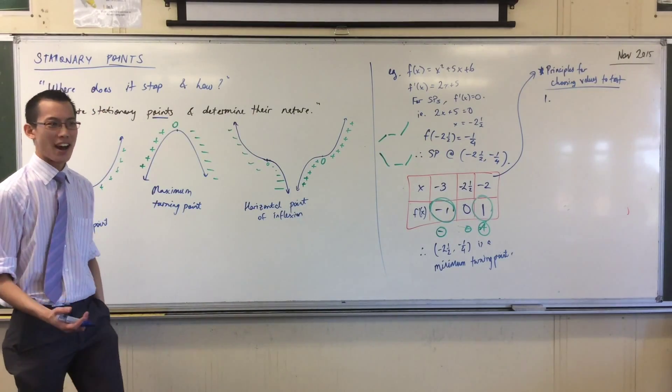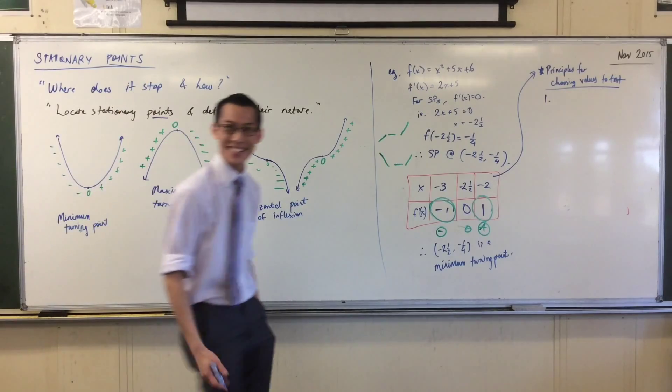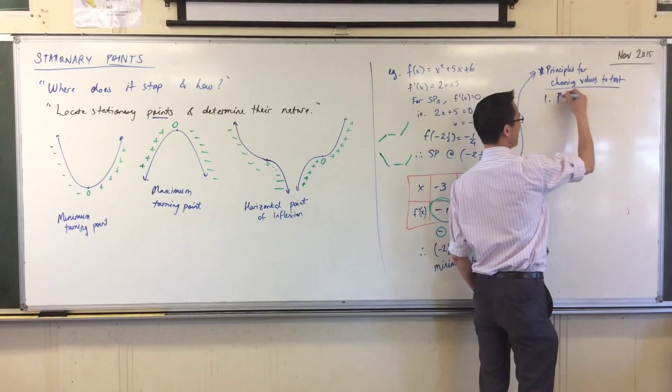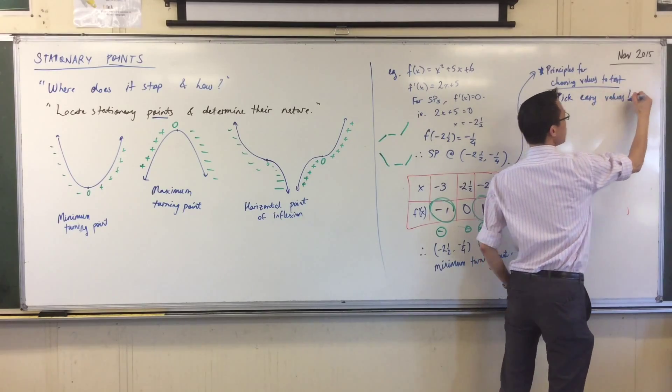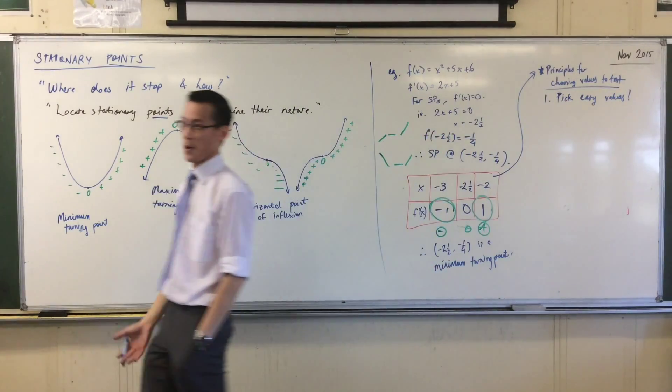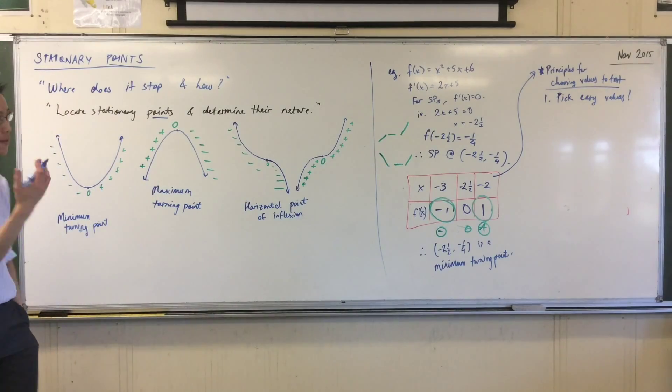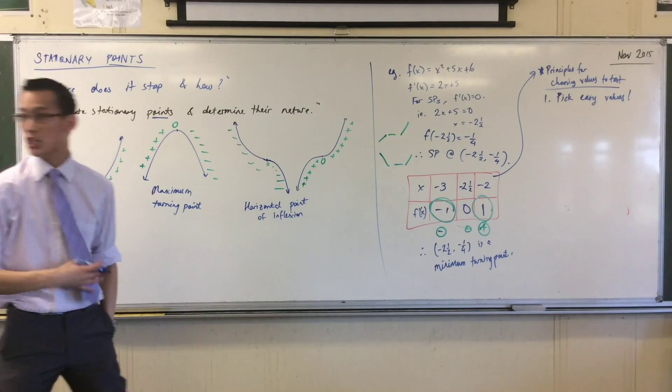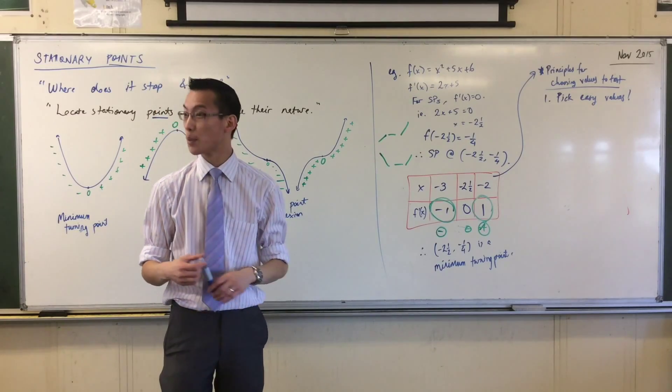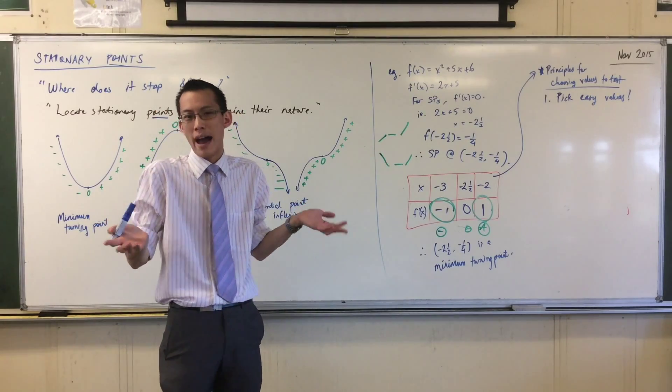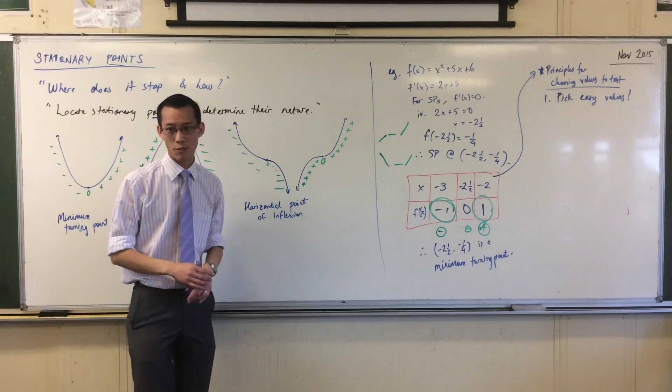Choose values that are going to be easy for you. Pick easy values. Now, what is an easy value? Easy values are whole numbers. Easy values are zero, things that when you are going to evaluate them, they are simple. When we get to trig functions, whole numbers probably not so useful. Multiples of pi, or nice fractions of pi, they will do things for you. Or like 30, 45, exact values.